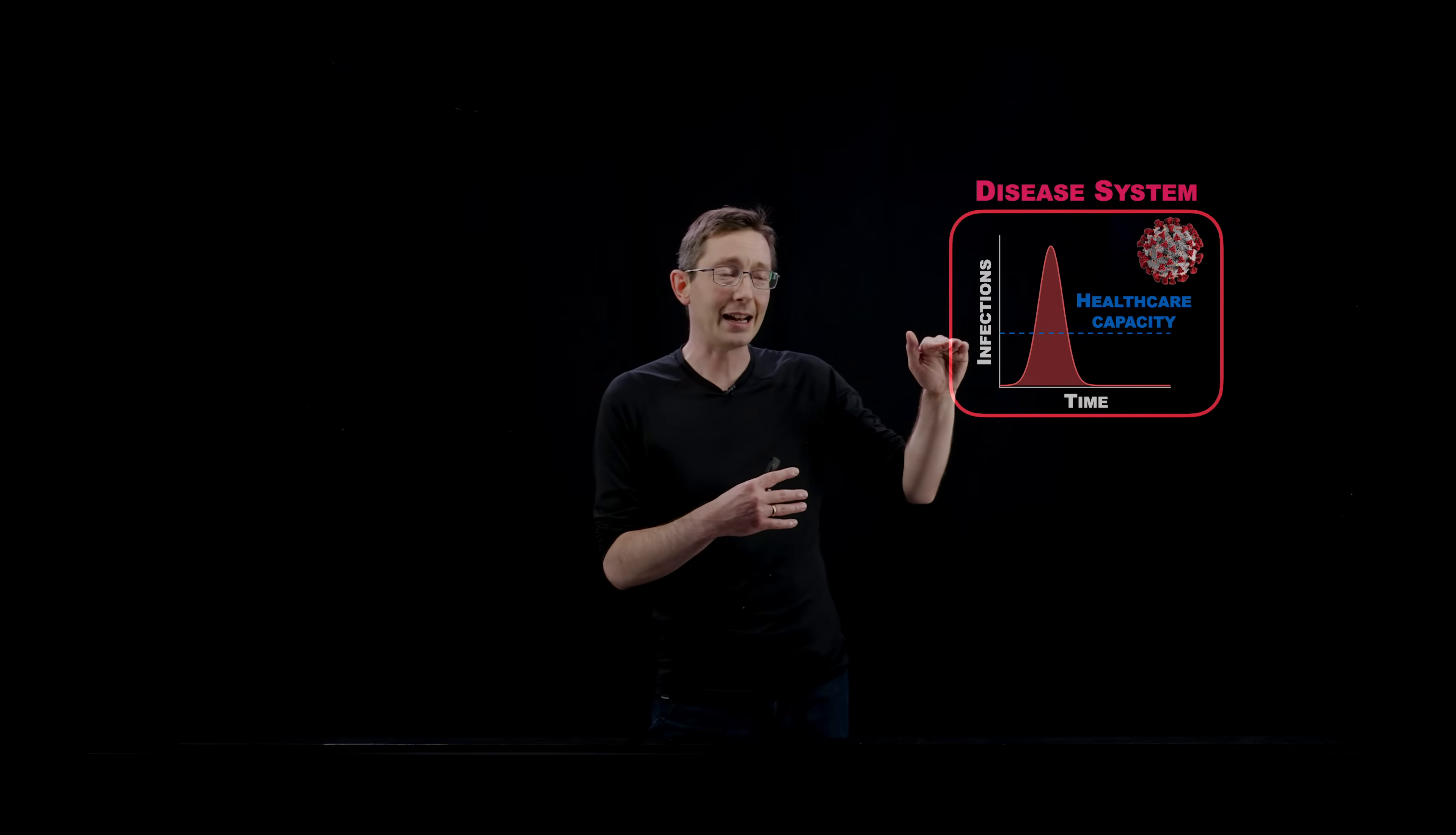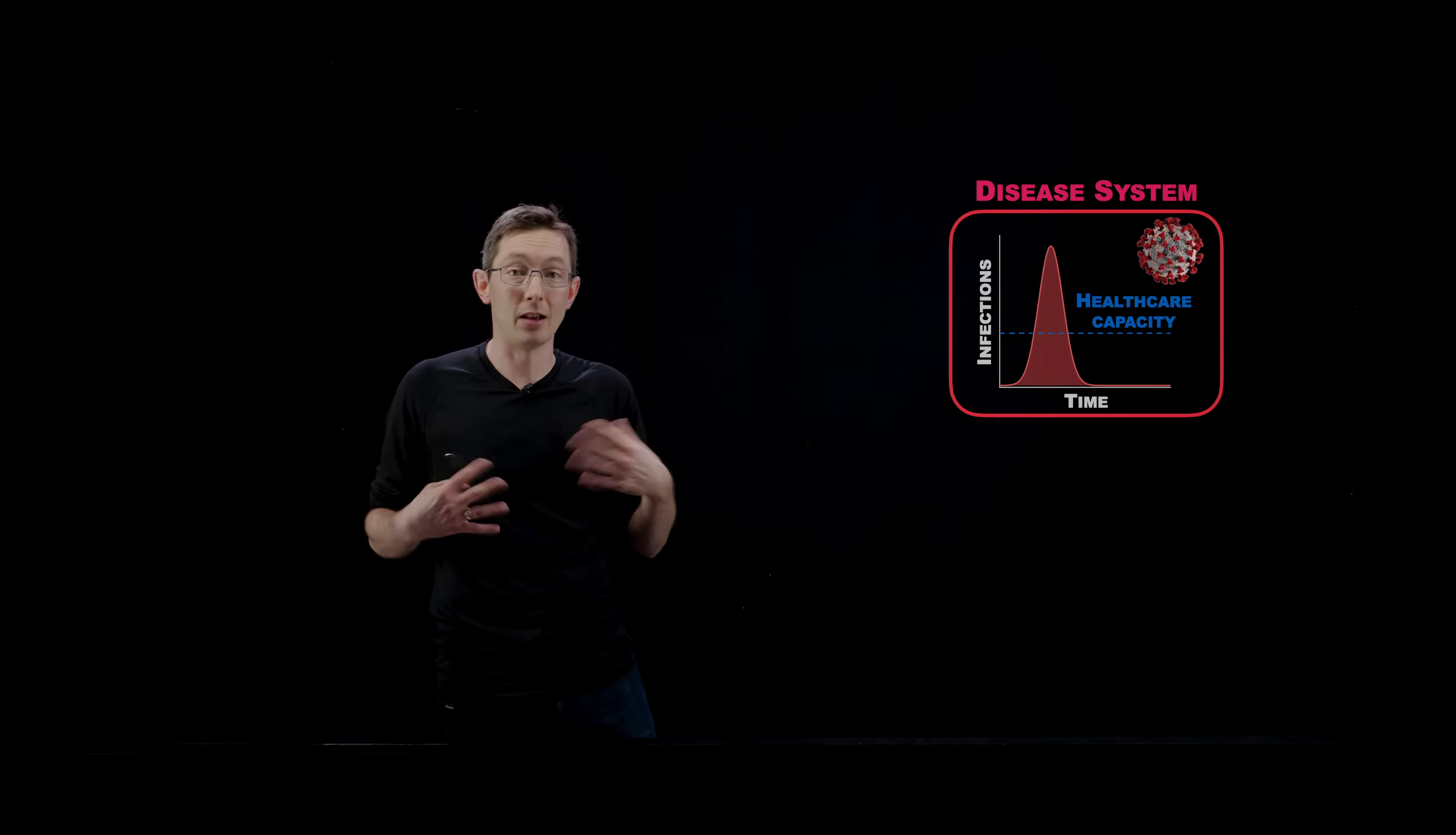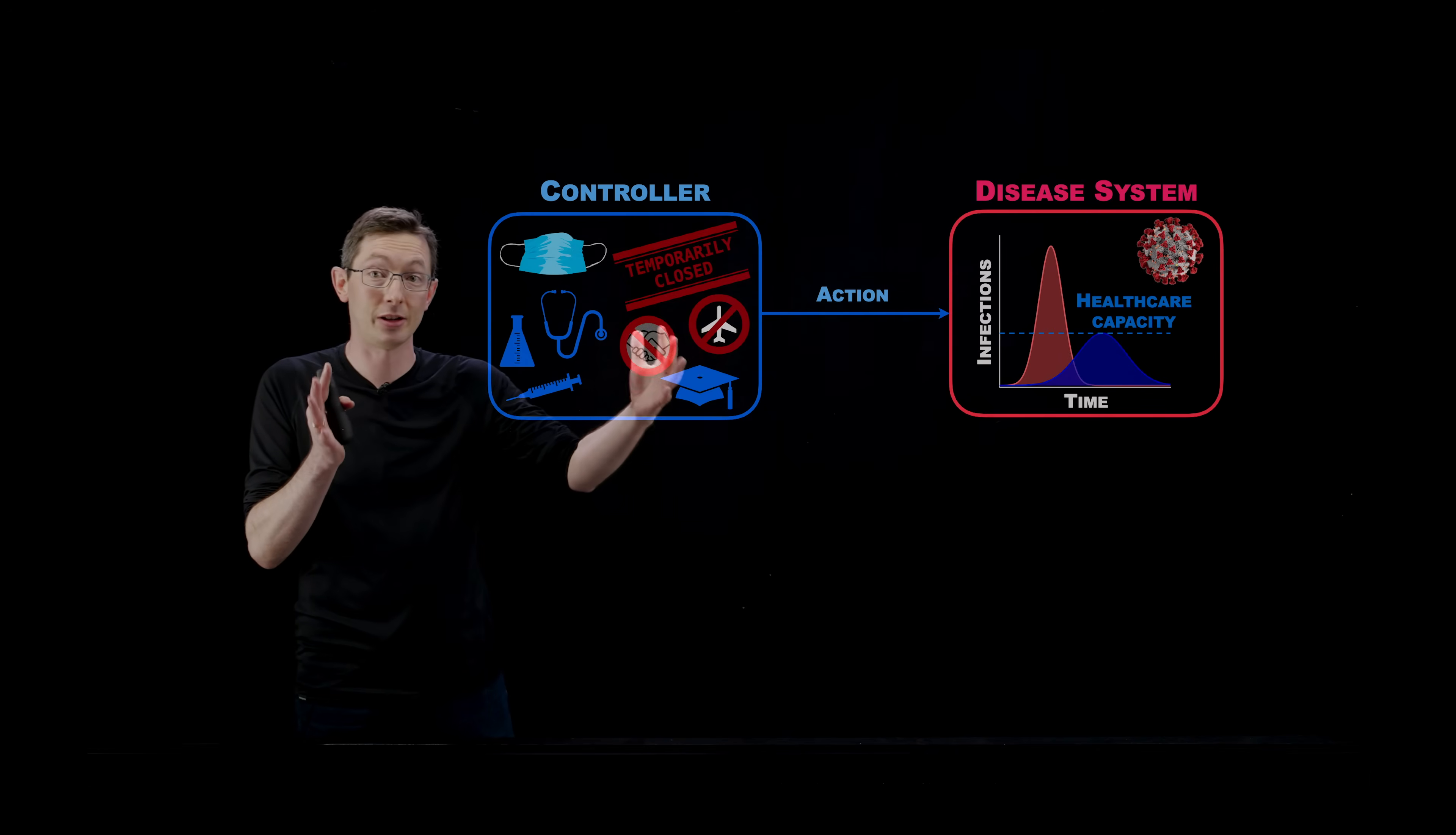But the big concern is that if this kind of infection rate is larger than the capacity of our healthcare system, then there are huge problems. And so the chances of people dying goes way up. And also this puts a lot of other people at risk who are already vulnerable. If the healthcare system is overtaxed, then a lot of vulnerable and sick people are going to suffer because of this. And so kind of the strategy that a lot of people have been talking about is this idea that we want to control the system through some actions to flatten this curve to be below the healthcare capacity. And it's necessarily going to stretch it out.